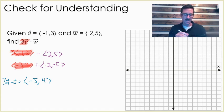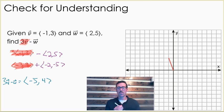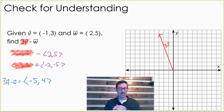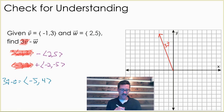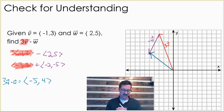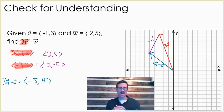Let's see if we get the same thing graphically. I'm going to begin by graphing vector V, which had a horizontal component of negative 1 and a vertical component of 3, but then we multiplied that by a scalar of 3, so 3V is going to look right there. Then we're going to take our W vector — W would go to the right 2 and up 5, but we're adding the opposite of W because we're subtracting, so instead I'm going to go to the left 2 and down 5. Our resultant vector starts at the initial point of the first vector and ends at the terminal point of the second vector. As you can see, it has a horizontal component of negative 5 and a vertical component of 4 — matching what we got algebraically.